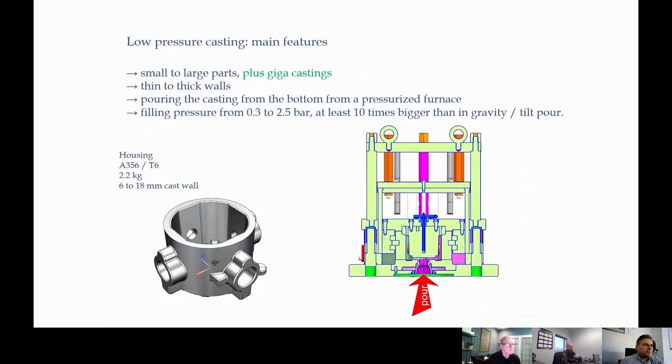If we go to low pressure, we have more advantages in this process. We can make small to large parts, but we also can make super large parts. The famous name is Giga Castings. The casting wall can be again thin to thick. Pouring of the casting comes from the bottom. We have a pressurized furnace on the bottom beneath the mold, and we apply pressure on the furnace, then we fill the cavity.